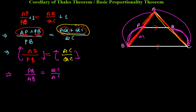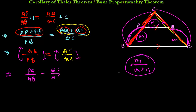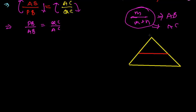To understand this generally: if one segment is M parts and the other is N parts, then PB (which is M parts) over the whole (M + N) will equal the corresponding ratio on the other side. So one part over the whole, or the whole over one part — both ratios hold equally for sides AB and AC.